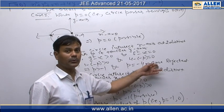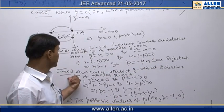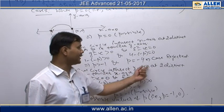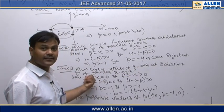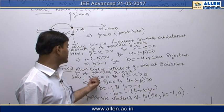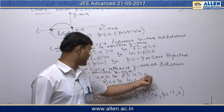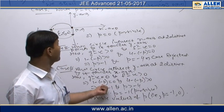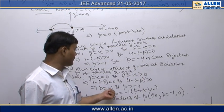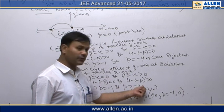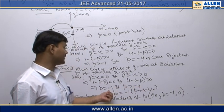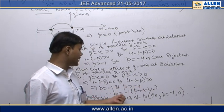The last case: when the circle intersects the y-axis at two distinct points and touches the x-axis. Here g² - c = 0 and f² - c > 0. On putting the data from the given equation, we get p = -1 and p > -4. From these two conditions simultaneously, we conclude p = -1.